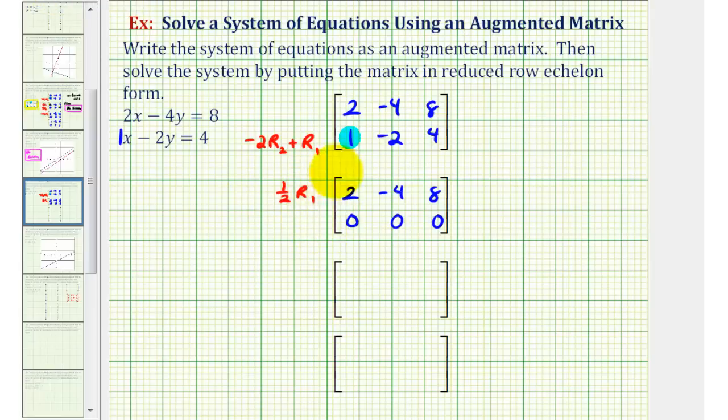The first row would now be one half times 2, that's 1. One half times -4, that's -2. And one half times 8 is positive 4. Second row is still 0, 0, 0.